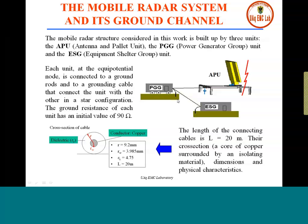Another important point is that the grounding impedance will depend on whether it rained the day before. This portable system will be placed on the ground, so depending on whether the soil is dry or humid, the grounding impedance will not be the same. It is not easy to design your radar system protection with a constant grounding impedance because it changes depending on the weather.